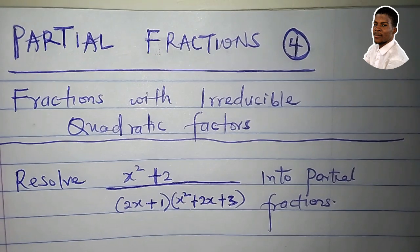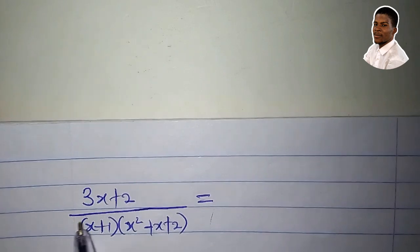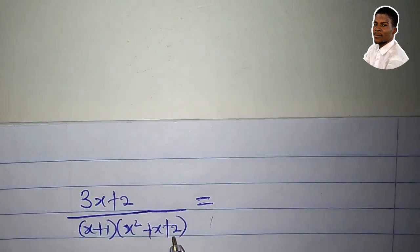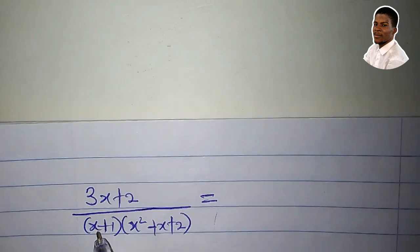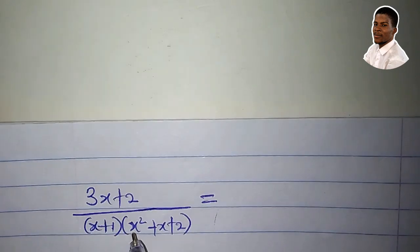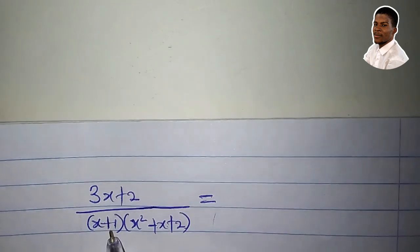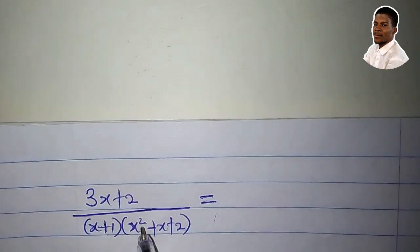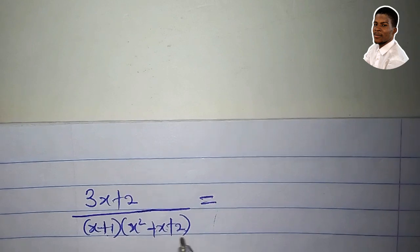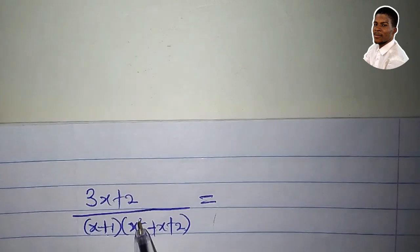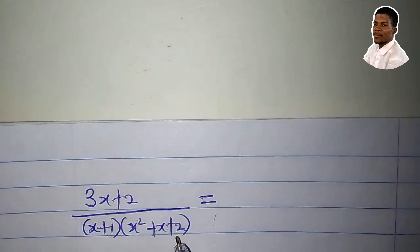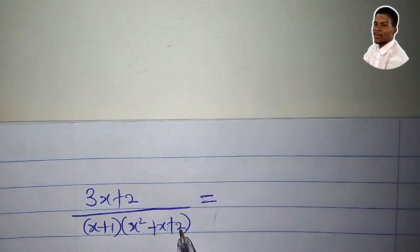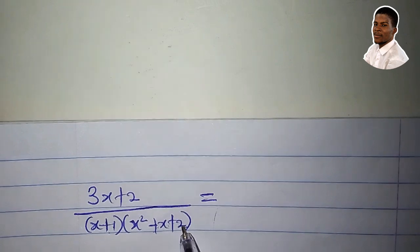So let's check something. Consider (3s+2) over (x+1)(x²+x+2). At the denominator, we have two factors: x+1 and x²+x+2. x+1 is a linear factor, and x²+x+2 is a quadratic factor.